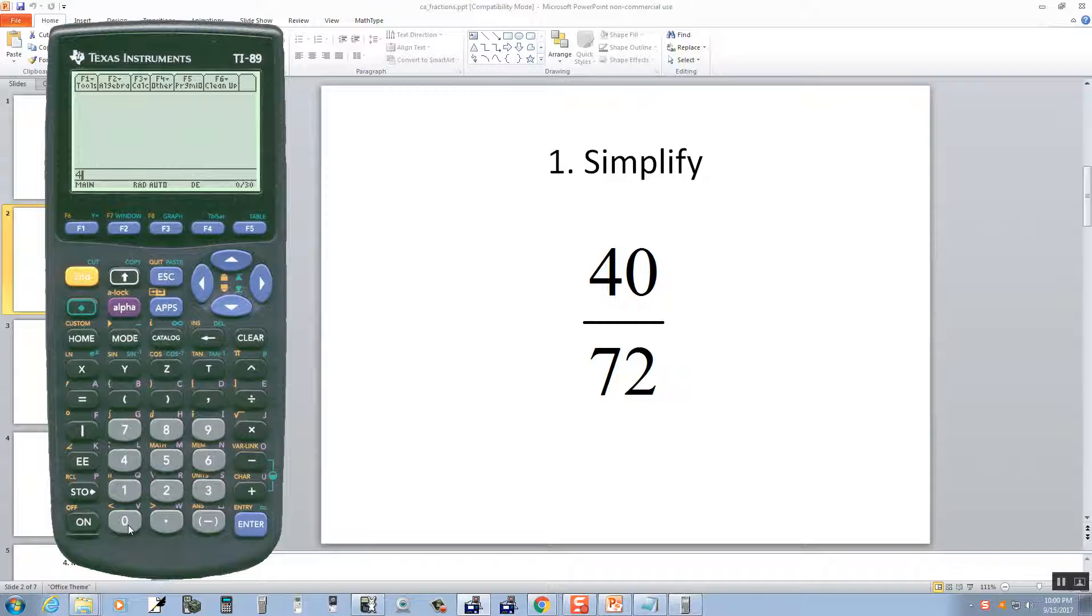Okay, so let me put it in there. Then we're going to talk about the different displays we see. 40 divided by 72, enter, and see it reduces it to 5 ninths.